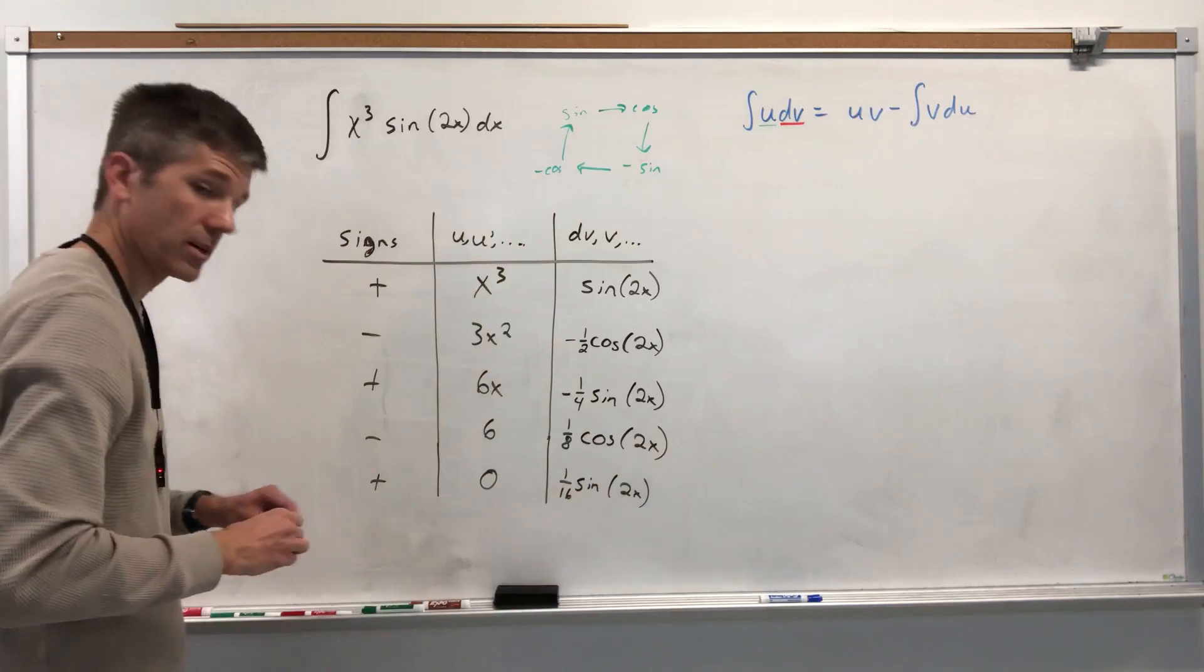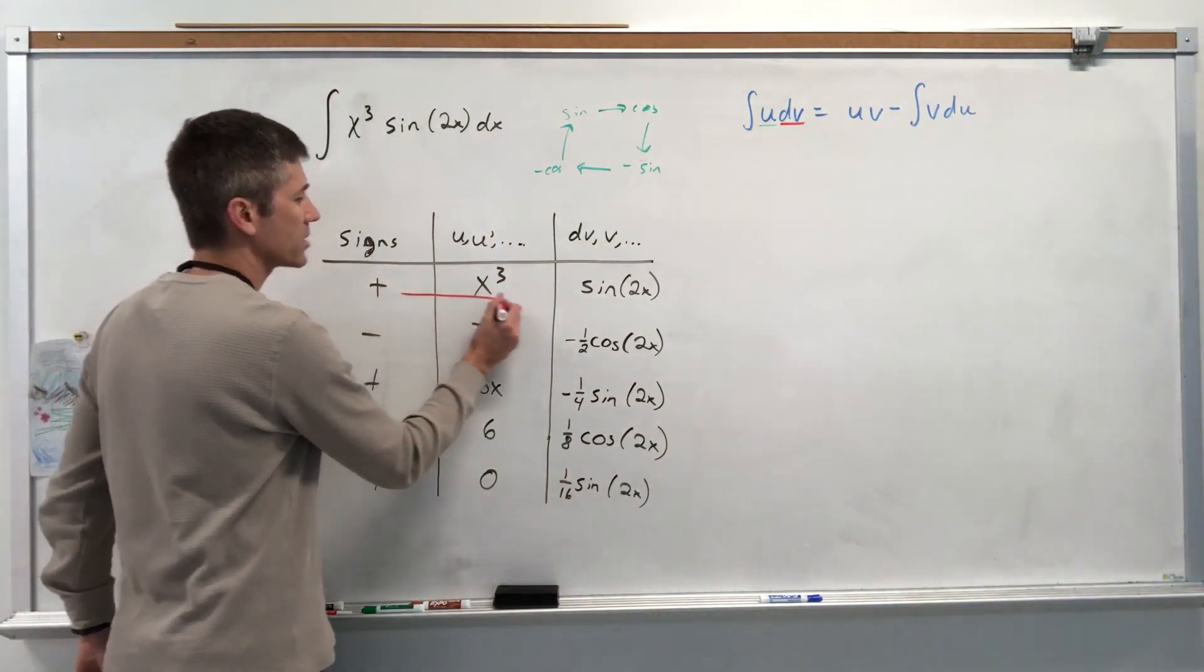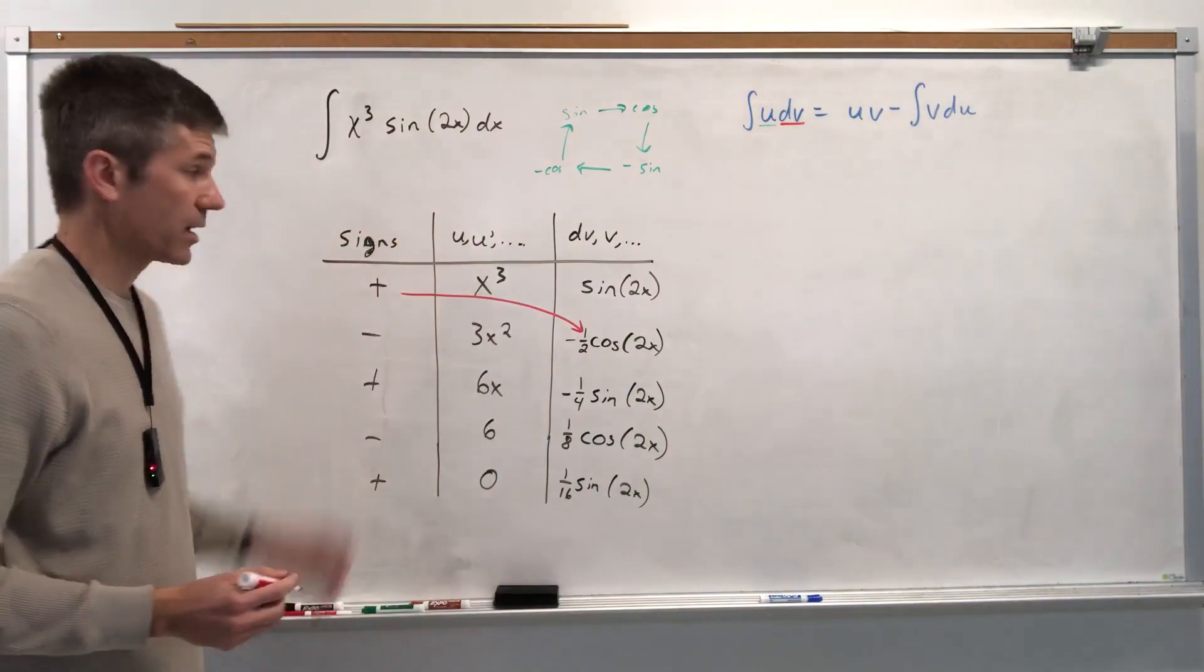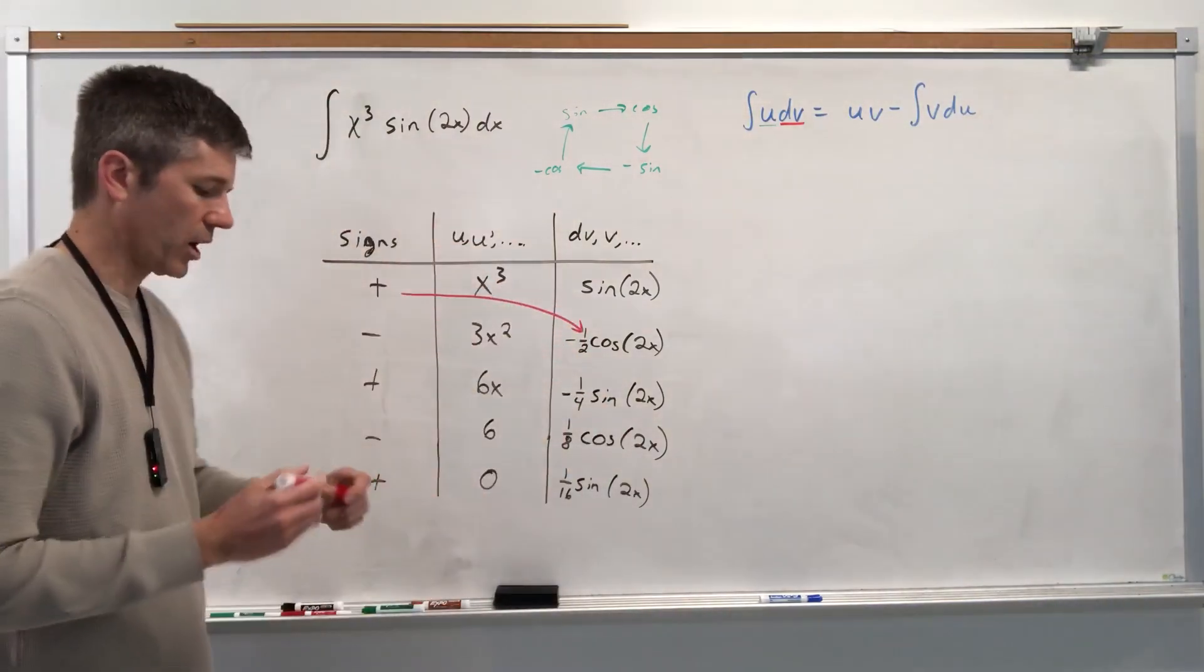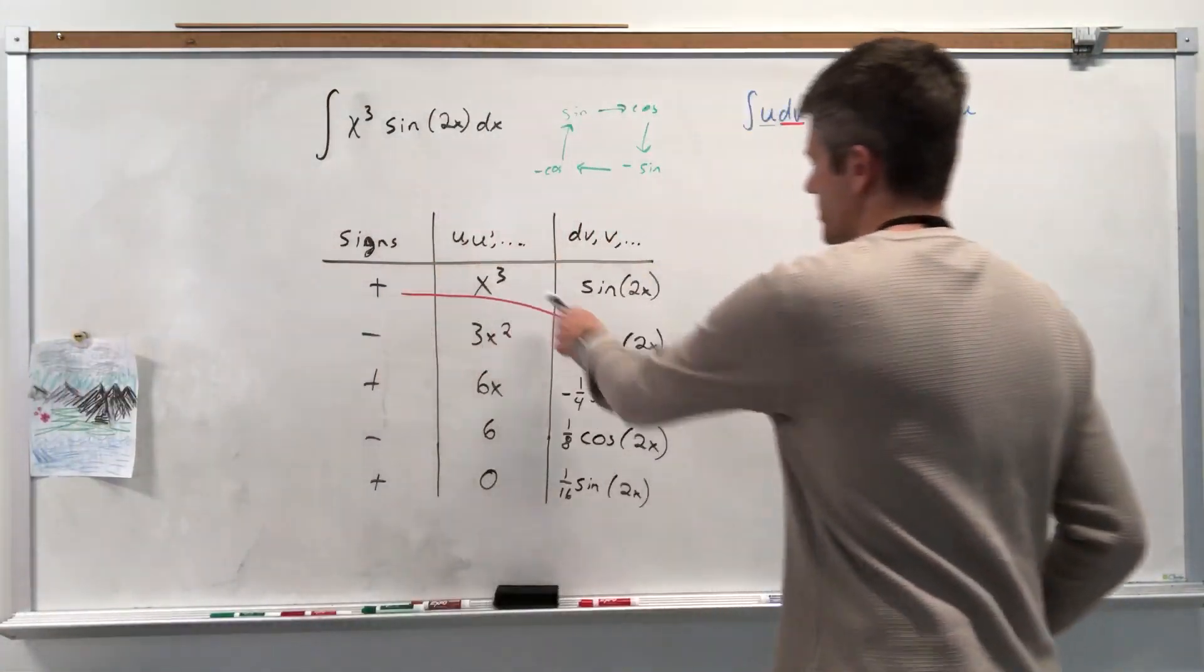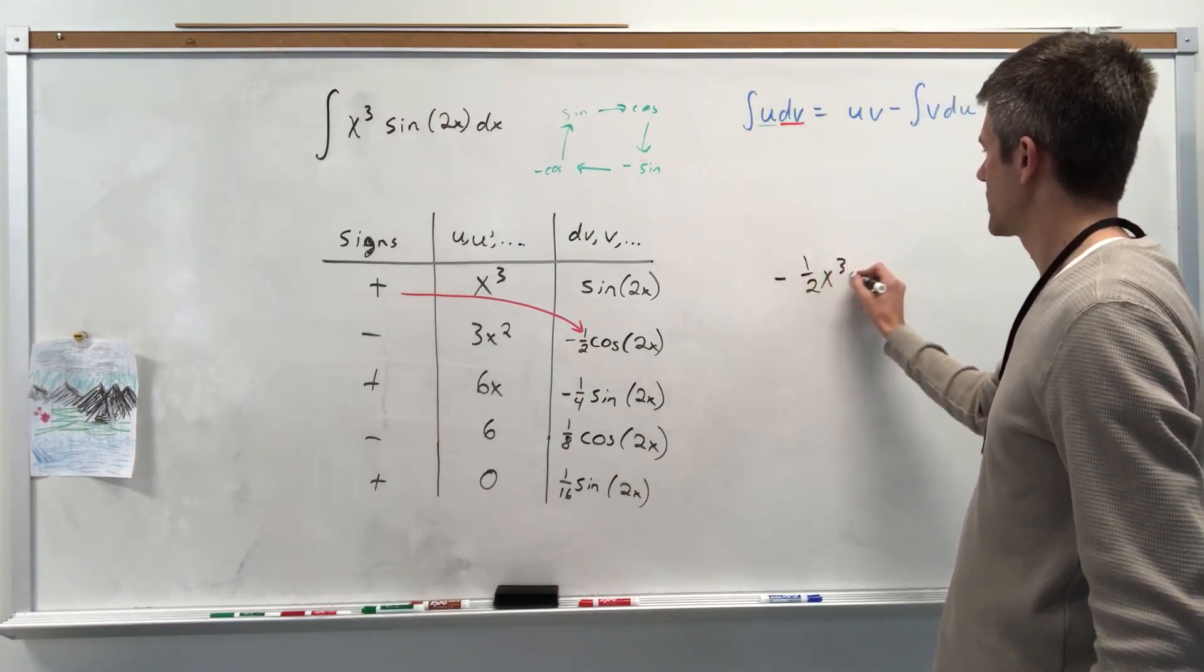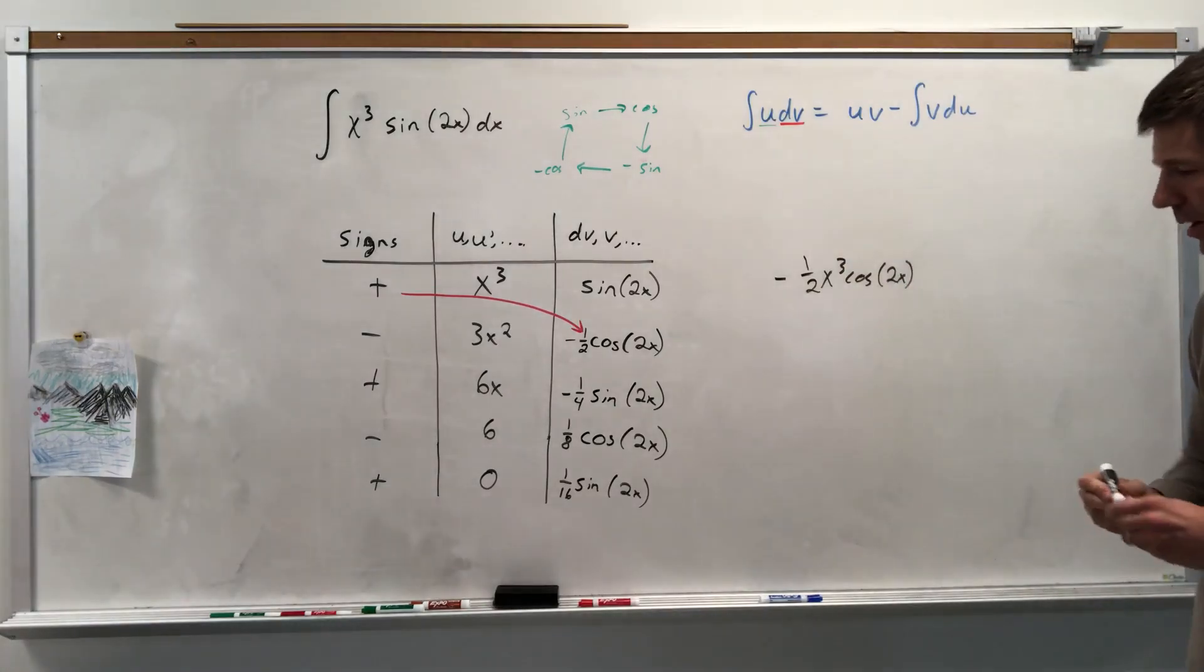Okay, we're ready for our final answer. And our final answer is x cubed times negative 1 half cosine of 2x. It's this, this, this. It always goes in and then it drops down one row on the next one. Always does. Always. So final answer is positive x cubed times negative. So it's negative 1 half x cubed cosine 2x. So far, we have more to go.